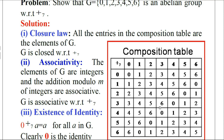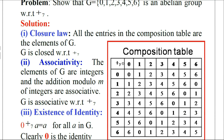Now consider the fourth row headed by element 3. 3+0=3, 3+1=4, 3+2=5, 3+3=6. For 3+4=7: when 7 is divided by 7, the remainder is 0.